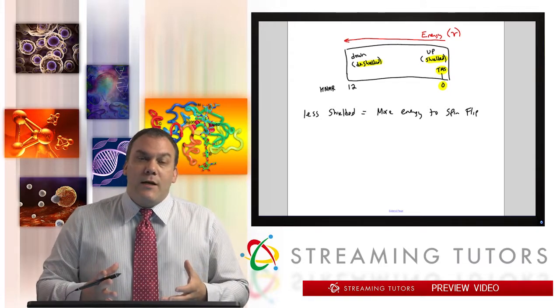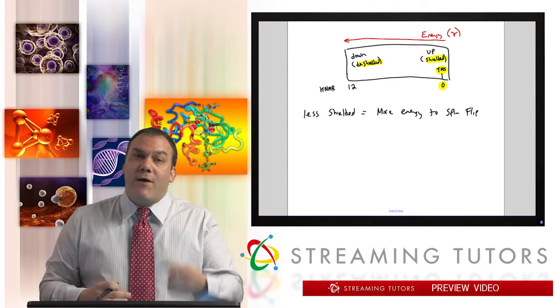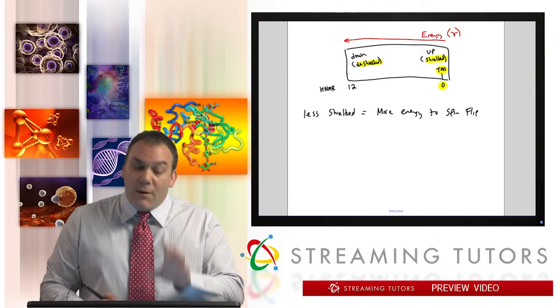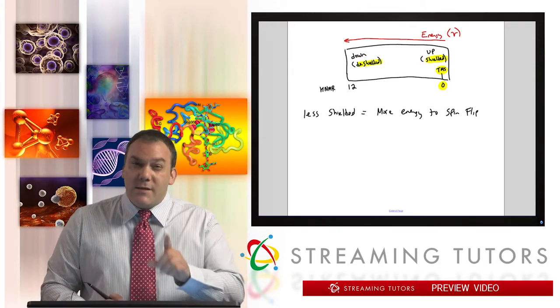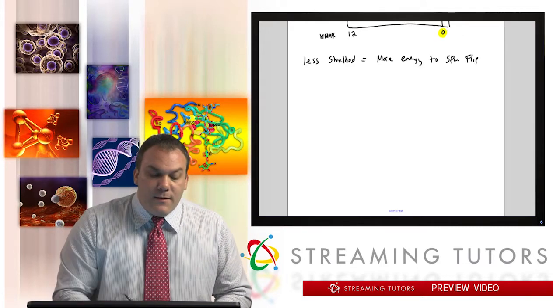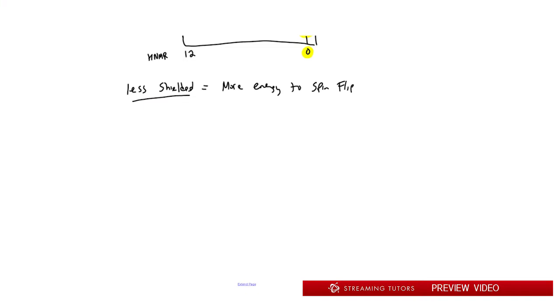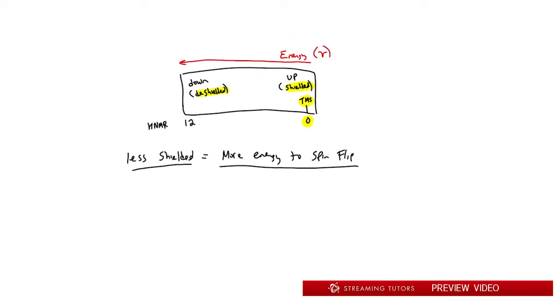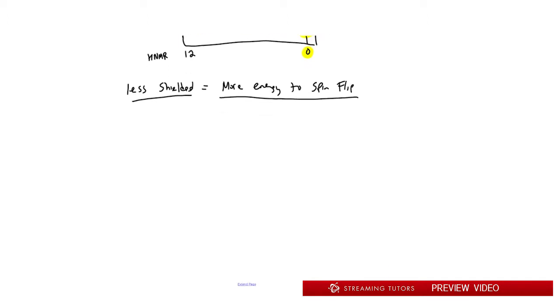So that's the first thing I want to make sure is very clear here. Think about it, let's do a thought experiment. And by the way I wrote here less shielded means more energy to spin flip, and that's what I'm showing you right there. So let's do a little thought experiment again with Ha and Hb, but in this case what we're going to do is we're actually going to have not the magnetism change, we're going to change the frequency.